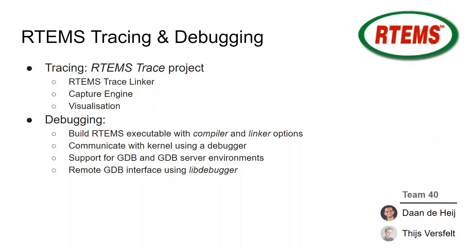Let's move on to the topic of tracing and debugging in RTEMS. The RTEMS trace project has several components, such as the RTEMS trace linker, which is used to generate trace records for user-specified functions. Another component, the capture engine, is used to generate CTF files, which can be visualized using tools like Trace Compass. Regarding debugging, in order to debug an RTEMS executable it needs to be built with compiler and linker options enabled. RTEMS supports numerous GDB and GDB server environments such as OpenOCD. The RTEMS kernel also provides a debugging agent called LibDebugger, which provides a remote GDB interface.